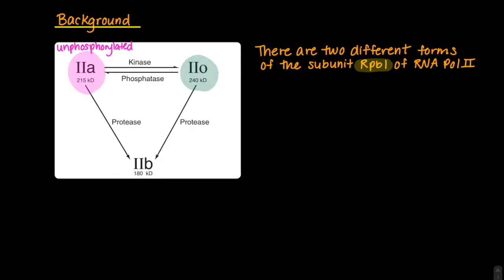The 2O form, highlighted in green, on the other hand, contains the phosphorylated form of RPB1. This conversion from the 2A form to the 2O form is carried out by a kinase, and this phosphorylation specifically occurs on the C-terminal domain of RPB1.